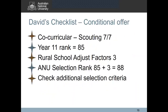I've created a little checklist for David at the conditional offer stage. At the first stage he needs to meet the co-curricular requirements, which he meets by scouting — this satisfies seven out of the seven skills listed on the slide earlier. In addition, we calculated his year 11 rank to be 85, and as he goes to a rural school, he is eligible for three equity-based adjustment factors, so his total ANU selection rank is 88.